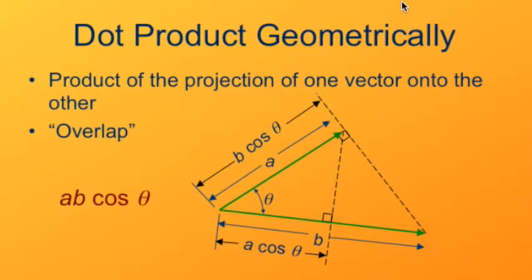It has a length of b cosine theta. Multiply that by the vector a, and again, we get the dot product ab cosine theta, the overlap between vectors a and b.